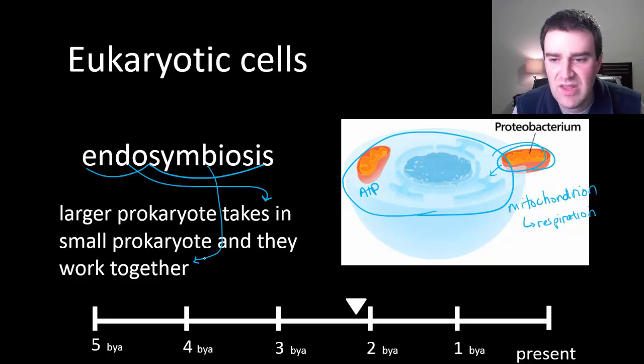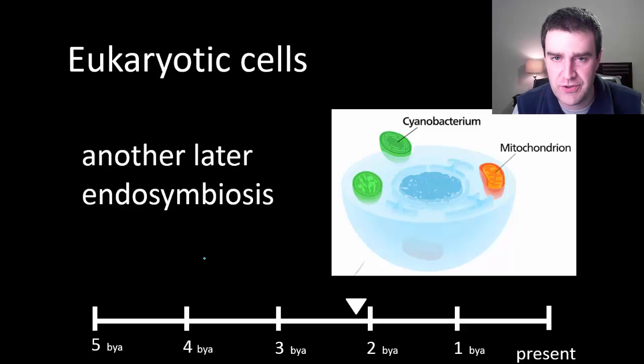We think this also happened with the chloroplast in organisms and eukaryotes today that have a chloroplast, like plants. They still have mitochondria. We think that came first because all modern eukaryotes have mitochondria, but only some have a chloroplast.